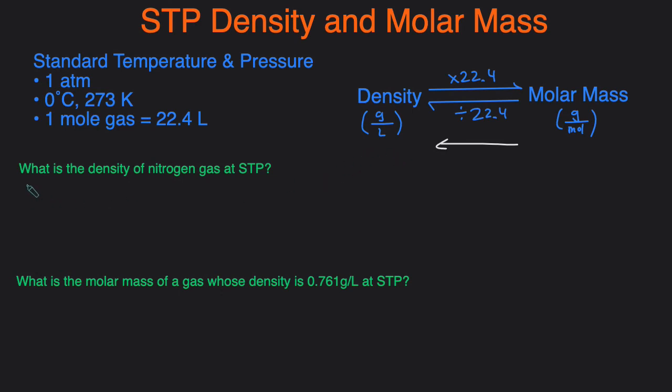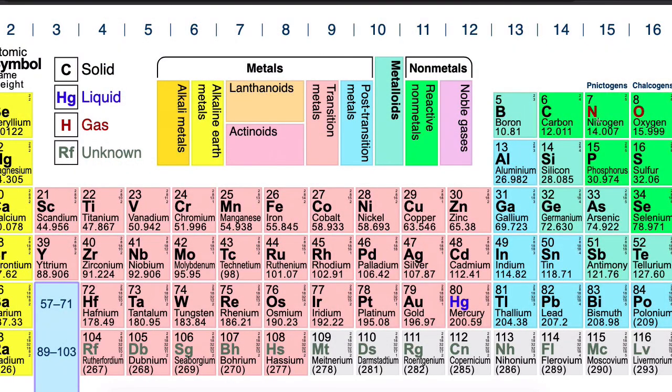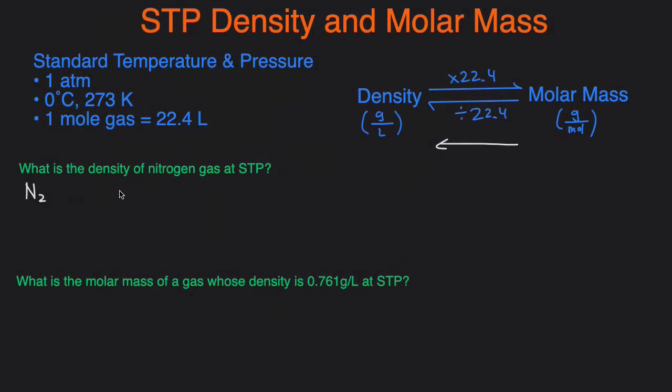Nitrogen is a diatomic element so its formula is N2. Let's take a look at the periodic table. You see that each nitrogen's molar mass is 14.007, so we just take this number and multiply by two because we have two N's and that will give us a molar mass of 28.014.